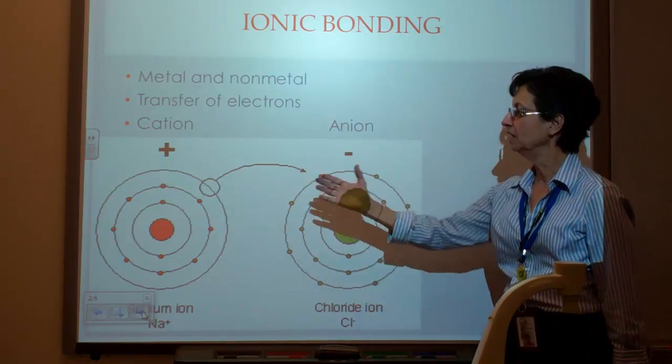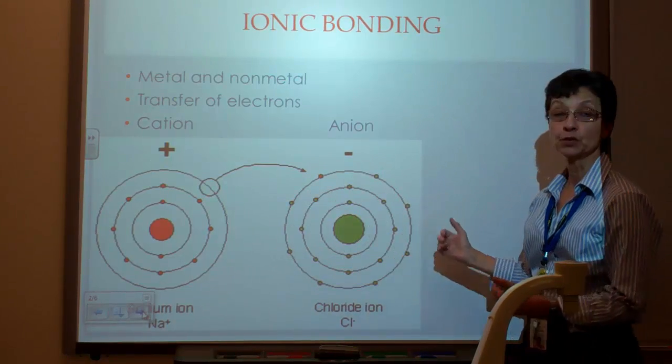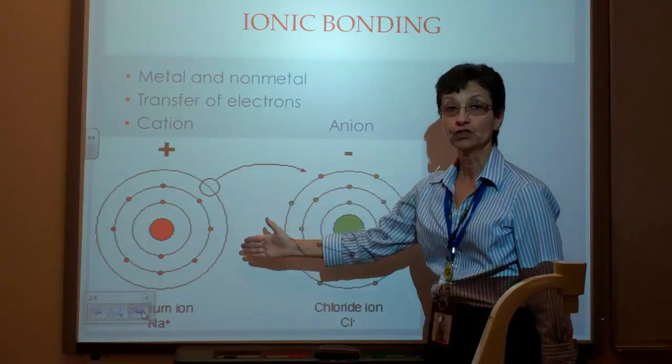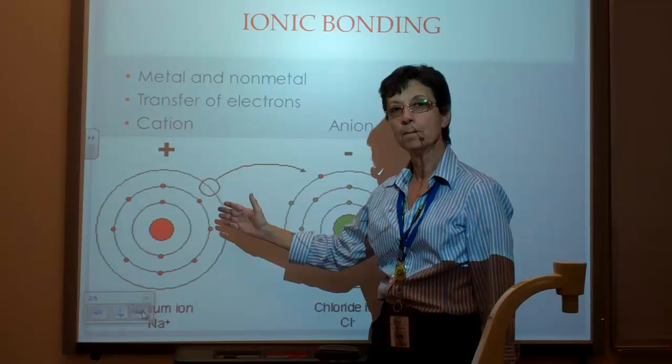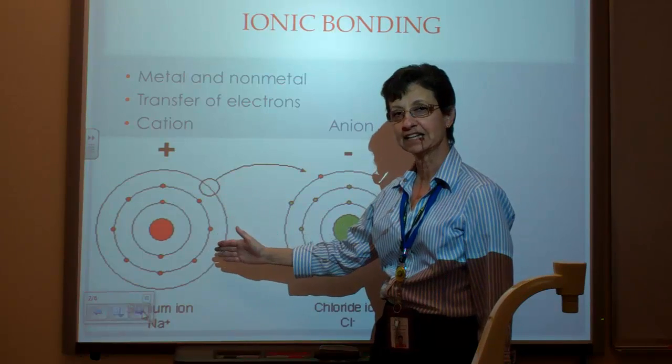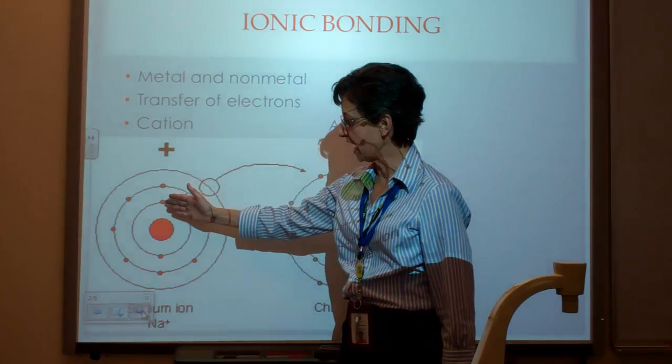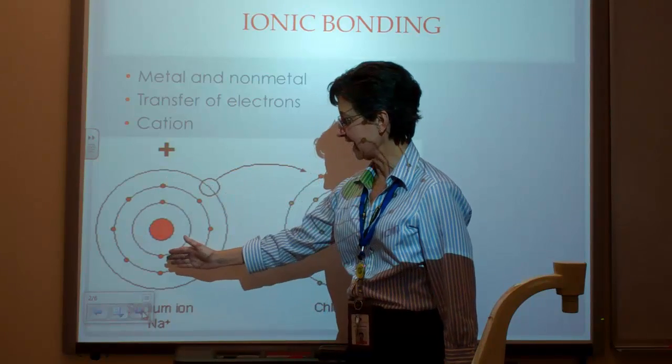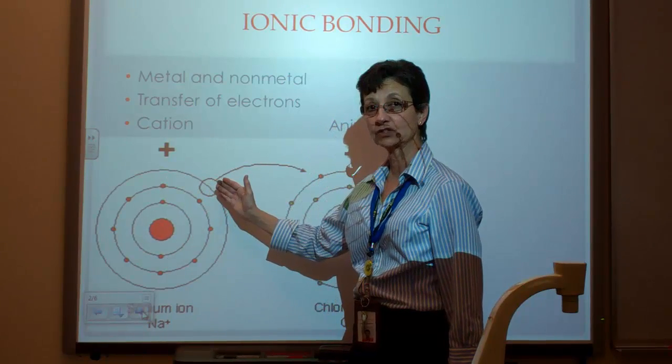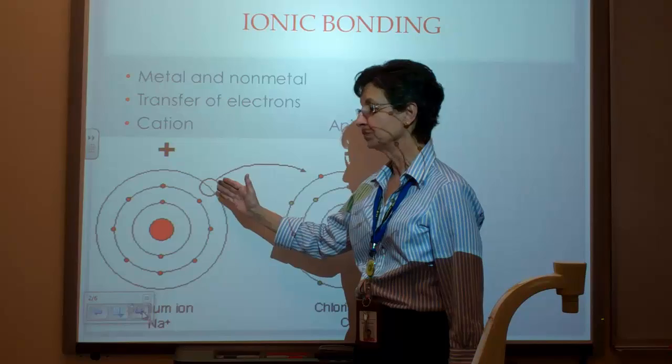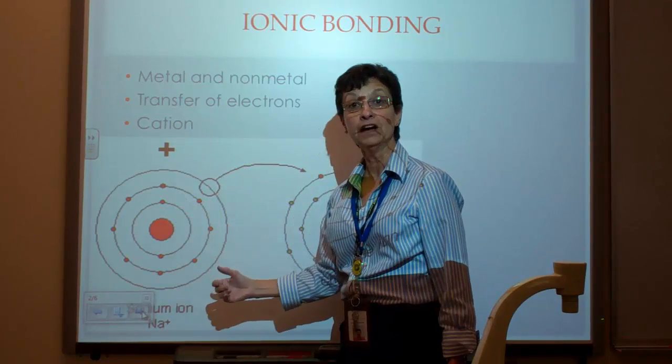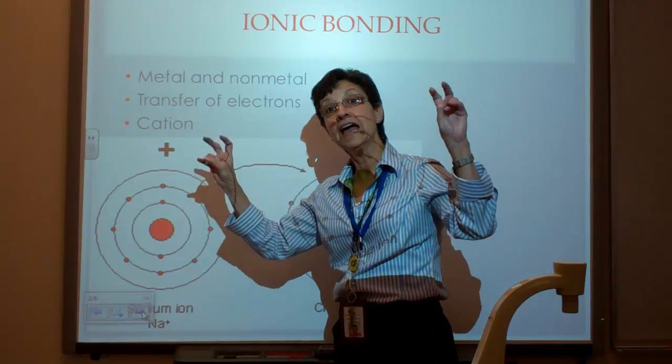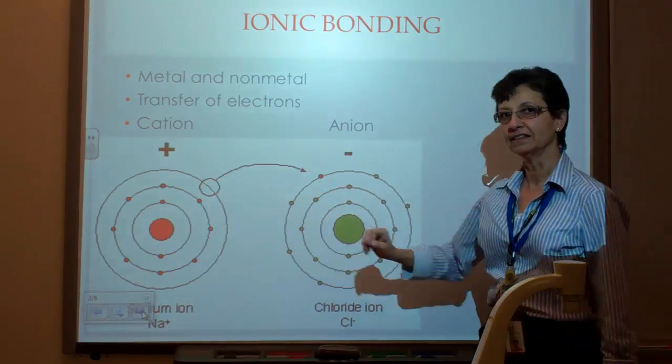Here's an example of a Bohr model of sodium chloride. Here's sodium. Sodium has 11 positive charges and 11 negative charges, so we have 2 plus 8 plus 1 more electron in the outermost energy level that makes this atom very unstable, very unhappy. It does not like that at all.